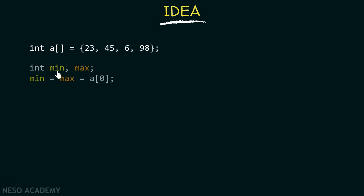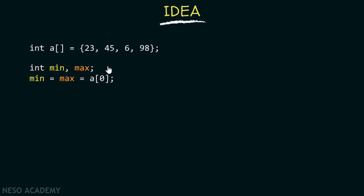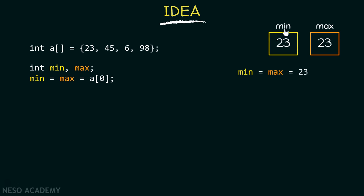Apart from this, we have these two variables min and max. As the name suggests, min contains the minimum value of this array and max will contain the maximum value. Initially, I am initializing these two variables with the first element of the array, that is 23. Here is the pictorial representation of min and max, both containing value 23.